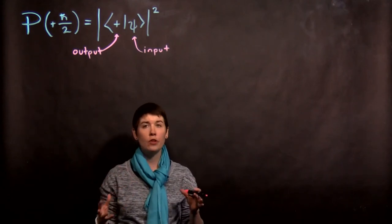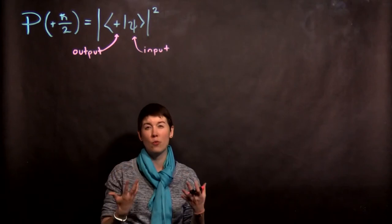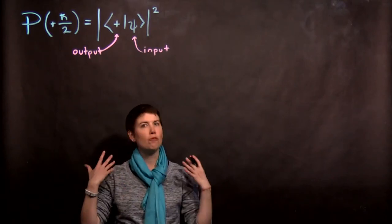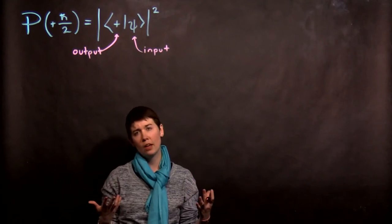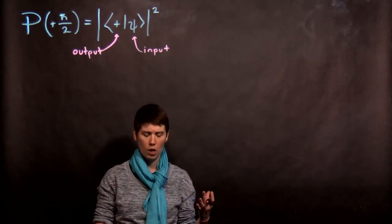I'm going to go through a concrete example now of how we use the Bracket notation, or what's called Dirac notation, to actually do some quantum mechanics. So the first system we're looking at in this class is the Stern-Gerlach experiment, thinking about spin one-half particles.